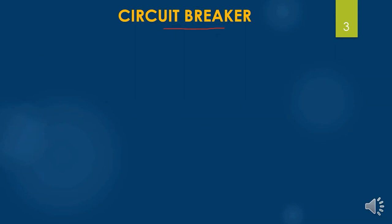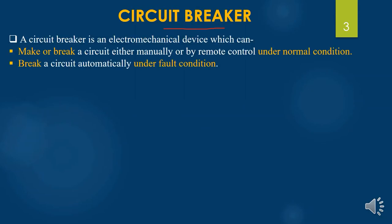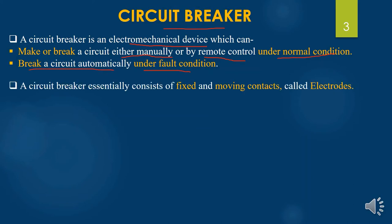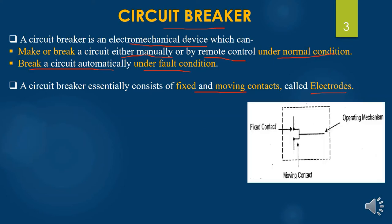A circuit breaker is an electromechanical device which can either make or break the connection. Under normal operating conditions, we can make or break a circuit either manually or by remote control. But during a fault condition, the circuit is broken automatically. A circuit breaker consists of fixed and moving contacts, which are called electrodes. These contacts are intact with each other during normal operation, but we can separate the two contacts either manually or by remote control.